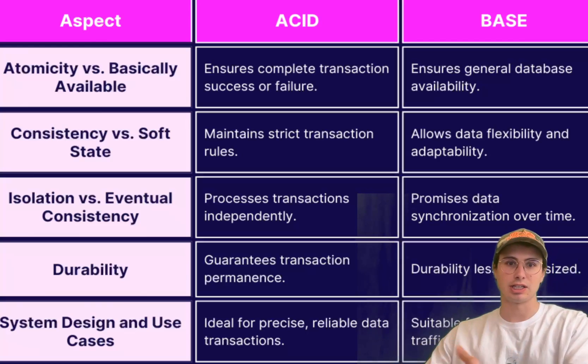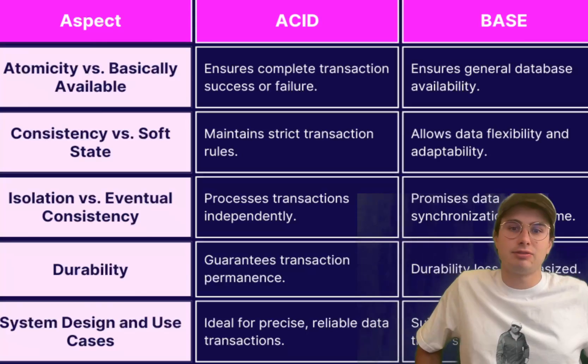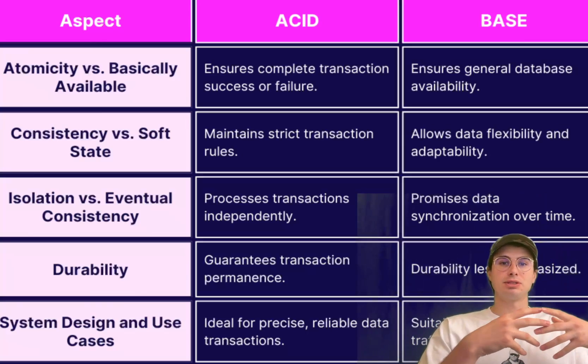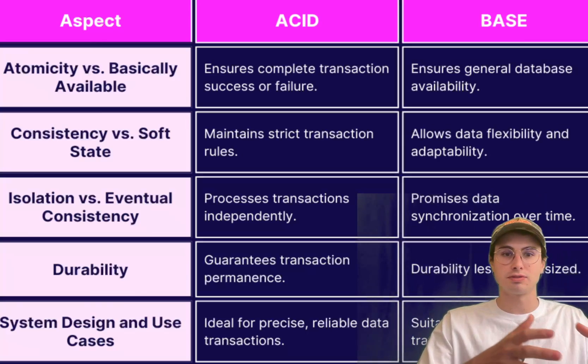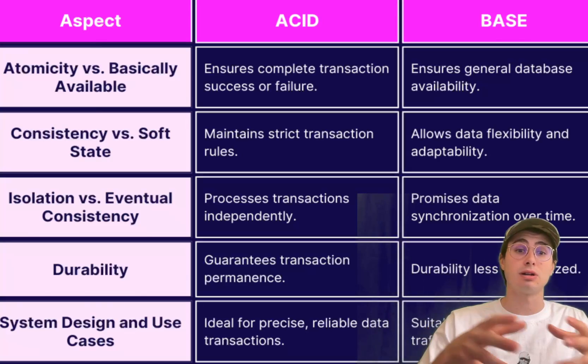And then finally, analyze your data access patterns. High frequency read and write operations or large volumes of concurrent transactions might affect the decision to fully implement all ACID properties.